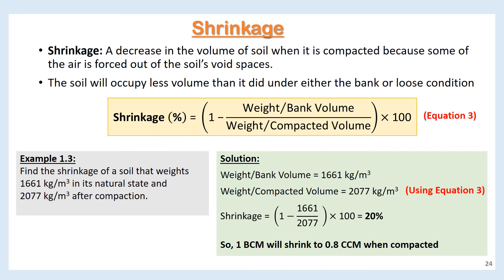Shrinkage is a decrease in the volume of soil when it is compacted because some of the air is forced out of the soil's void spaces. The soil will occupy less volume than it did under either the bank or loose condition. Shrinkage is determined using equation 3: the formula is 1 minus weight per bank volume divided by weight per compacted volume, multiplied by 100.